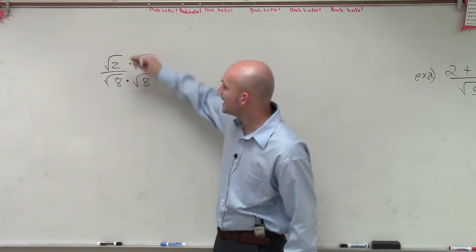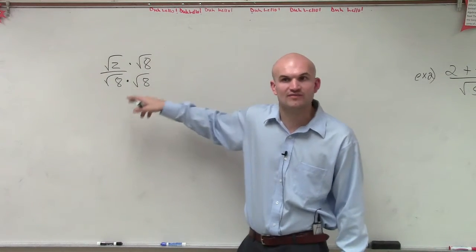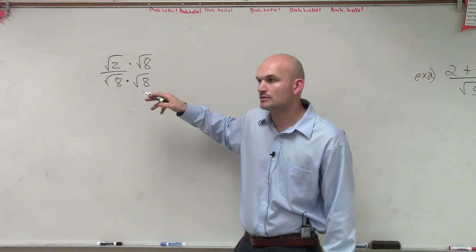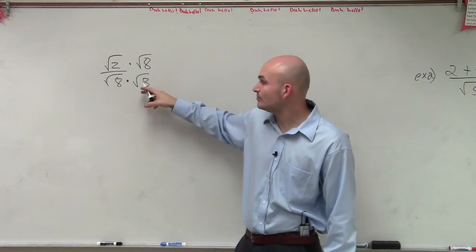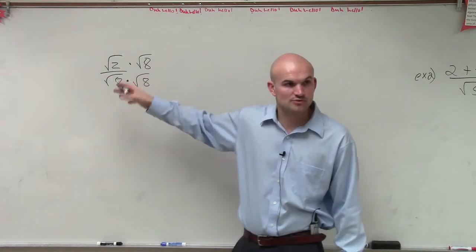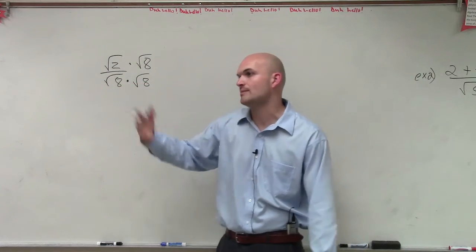Because the reason being is we have to get this to the square root of 8 squared. The only reason I can multiply the square root of 8 times square root is because they're both the square root of 8. So they're both under square root, so I can multiply them.